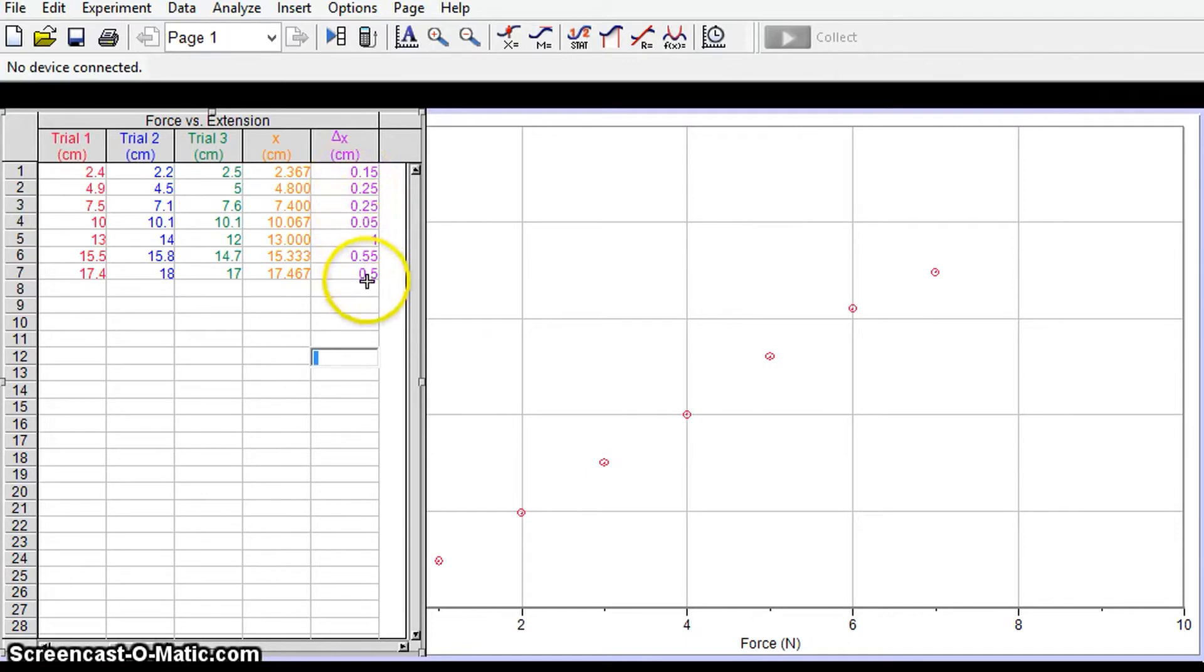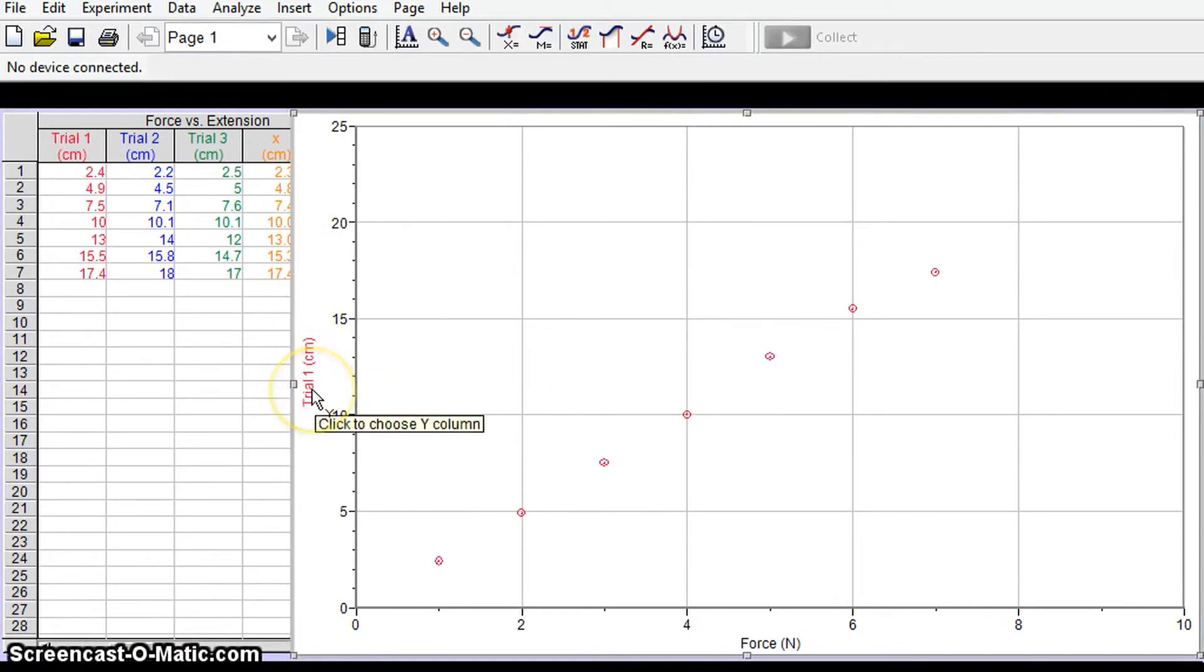And we're going to use this column to actually do that. Firstly I'm going to plot my average values. At the moment I'm plotting trial 1 against the force and I want my average values, my average values are this orange column here.